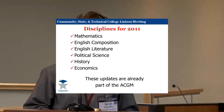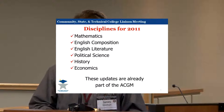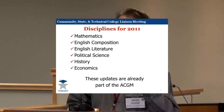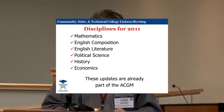Disciplines completed for 2011 — things already in the ACGM: a bunch of the math courses — not every single one, but all of the most commonly used ones: statistics, college algebra, the calculus sequence — all of those have been done. English composition and English literature: that's all of your freshman comp courses, technical writing, and your sophomore literature courses.